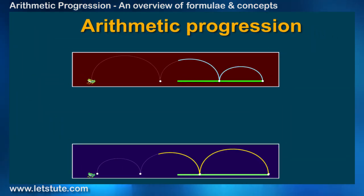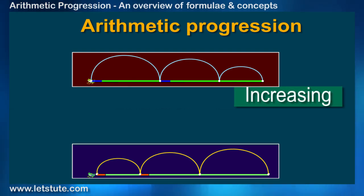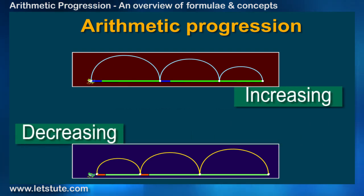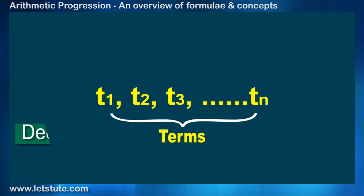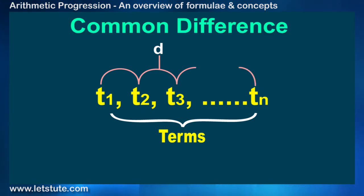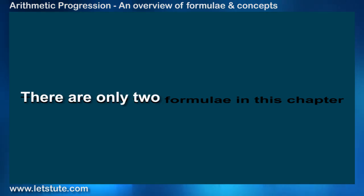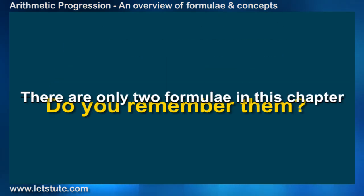AP is a sequence of numbers that follow a particular pattern and can be in increasing and decreasing order. Each number of the sequence is known as a term of the AP. The amount by which the next term is increased or decreased is called common difference. There are two formulae in this chapter.